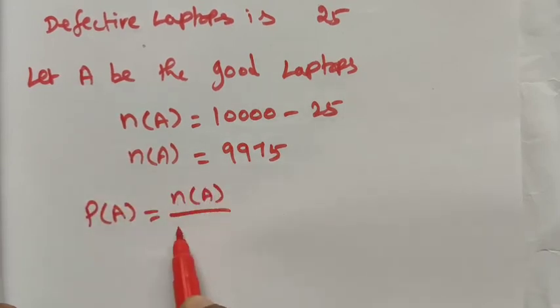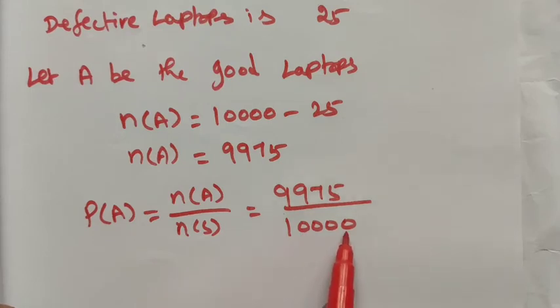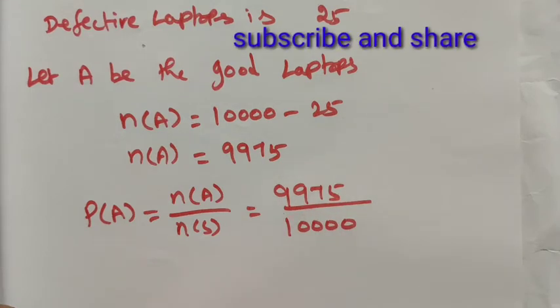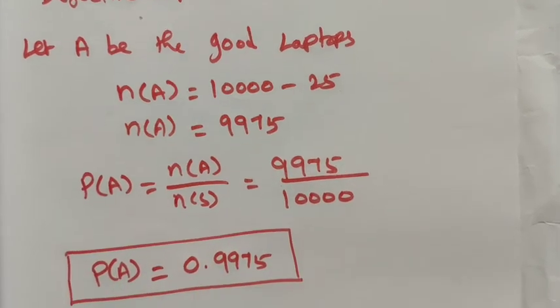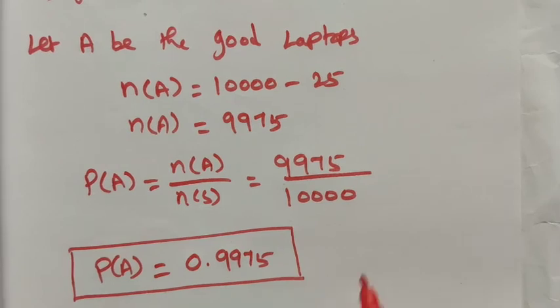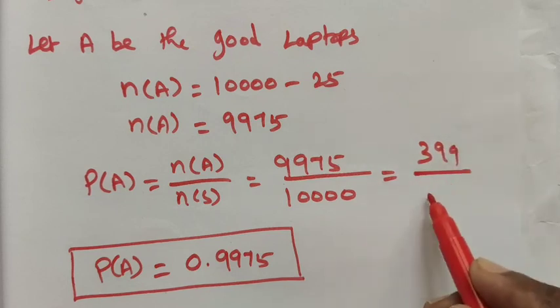We know the formula: P(A) equals n(A) divided by n(S). n(A) is 9,975 divided by 10,000, which equals 0.9975. This is the probability of the good one. We get 399 out of 400.